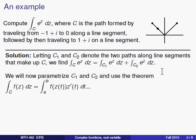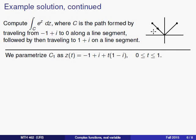Now, to do that, we're going to parameterize our paths C1 and C2, and then we're going to use this theorem from the previous slide. So let's start with C1. We're dealing with a line segment from minus one plus i down to zero. We can parameterize that by taking minus one plus i, and then adding t times one minus i, where t ranges from zero to one.